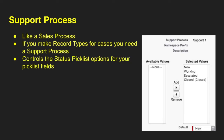Support processes are like sales processes. If you want to have a different status picklist option for different record types, you need a support process. When you make a record type for cases, you need to have a support process. This support process controls the status picklist field options. For example, selected values might be new, working, escalated, and closed, while additional values remain in the available values. You can create different processes — so product A might need support process one, and product B might need support process two.